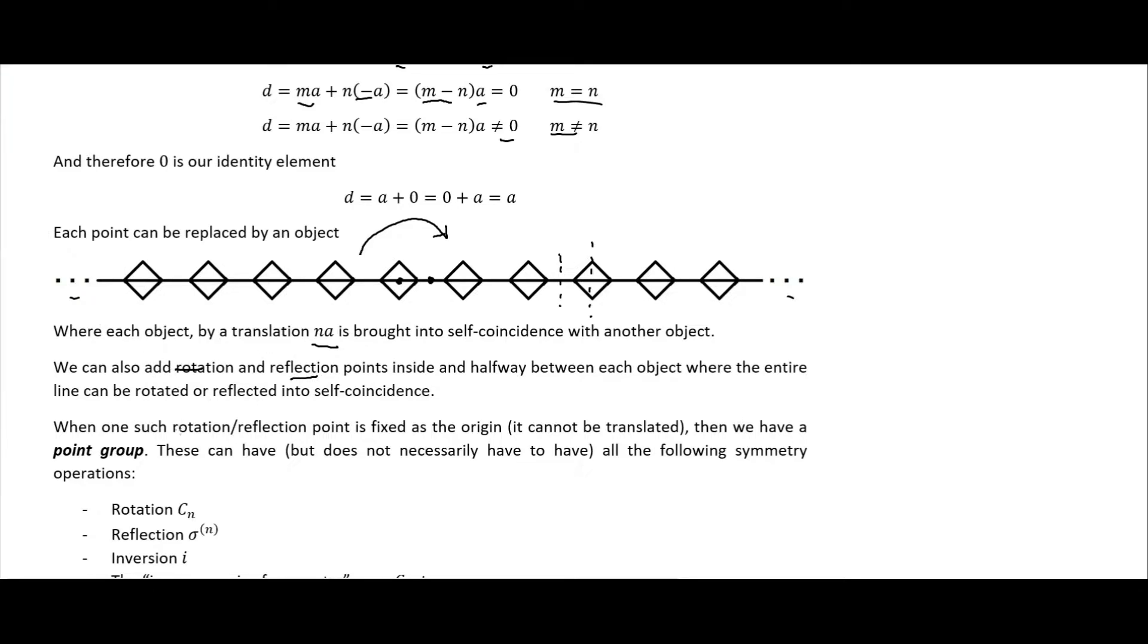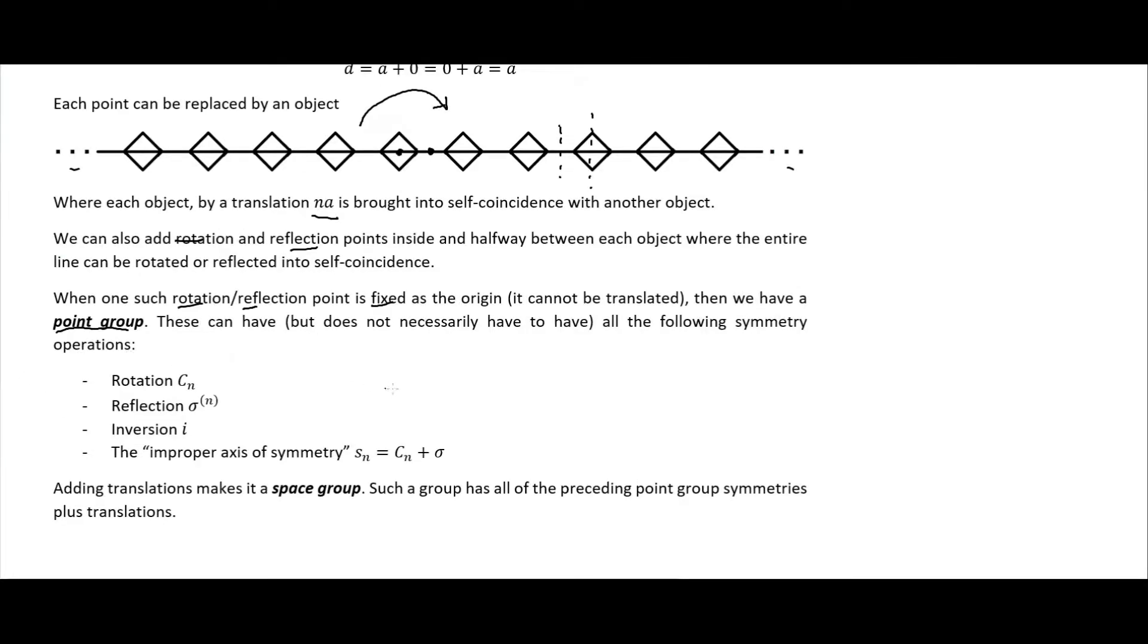We can add rotation and reflection points. When one such rotation or reflection point is fixed as the origin and can't be translated, then we have what's called a point group. These have some symmetry operations which I discussed briefly in the first video on this series: rotations, reflections, inversions, and these improper axis of symmetries which is like a rotation plus an inversion where the rotation you are performing is not a symmetry operation by itself and the reflection is not a symmetry operation by itself, but both together become a symmetry operation.